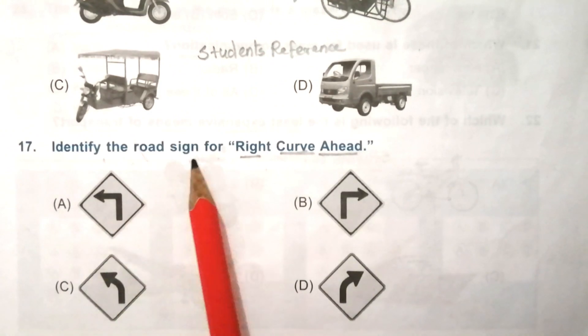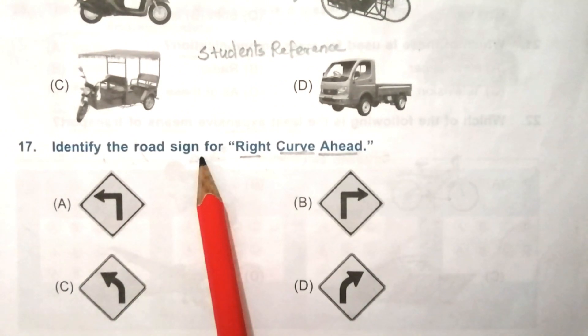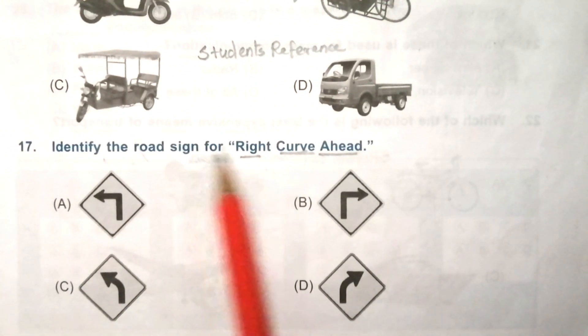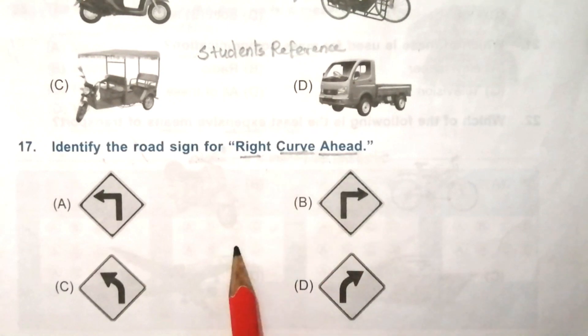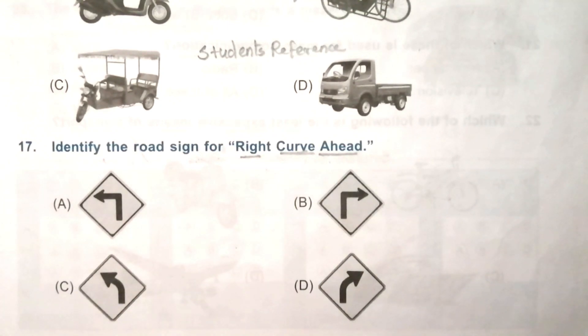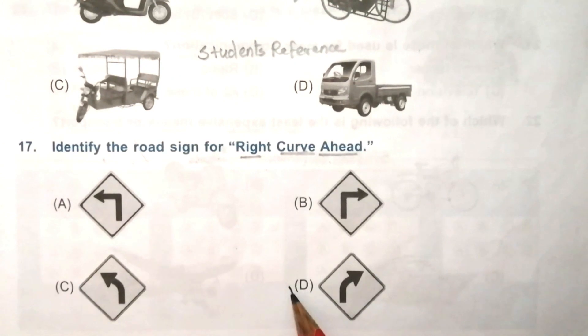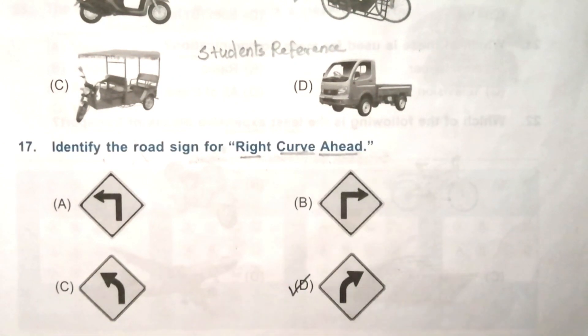Question 17: identify the road sign for 'right curve ahead.' Look at the given options carefully. The answer is D — right turn.